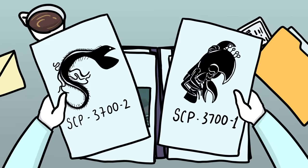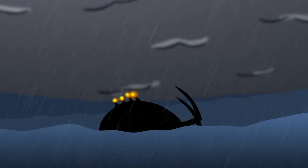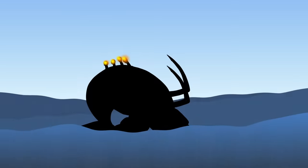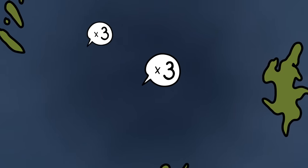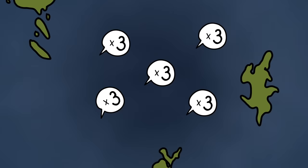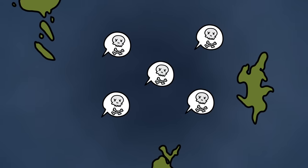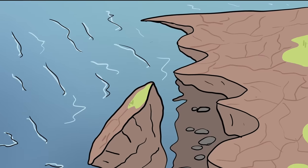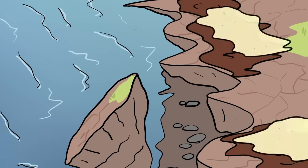A number of changes happen when one of the creatures wins. When 3700-1 is successful, major storms in the area immediately cease, crop yields double, and local oceanic life increases their reproductive rates by a factor of 3. This can lead to dead zones forming from the overpopulation of certain species of zooplankton. Erosion rates on the islands also increase by a factor of 5, which has led to the Foundation needing to bring in large amounts of dirt and sand in an attempt to combat it.